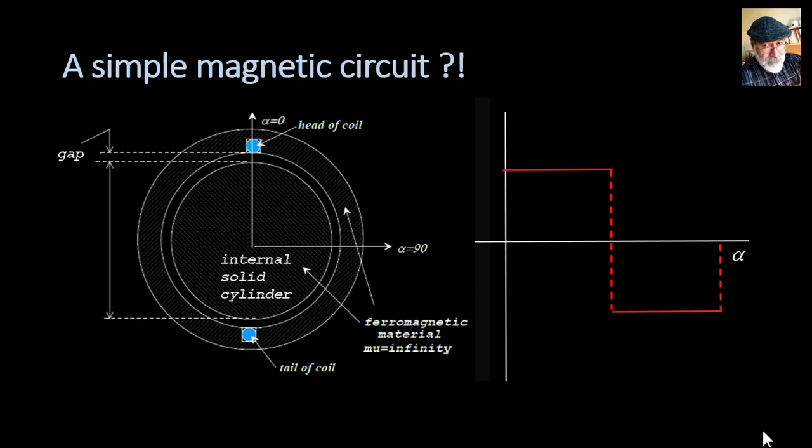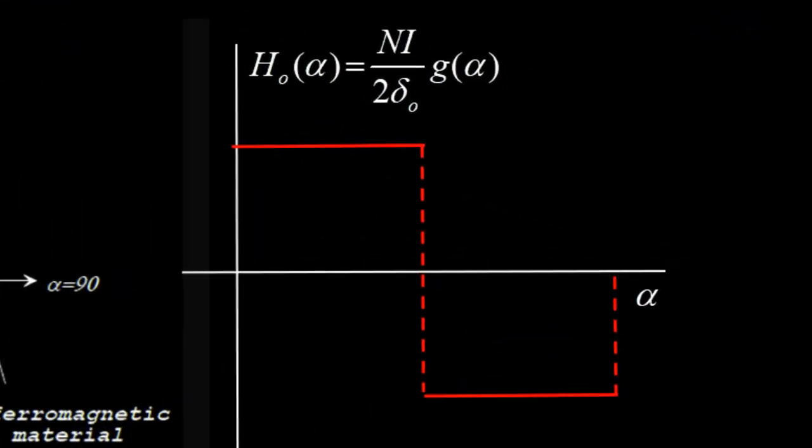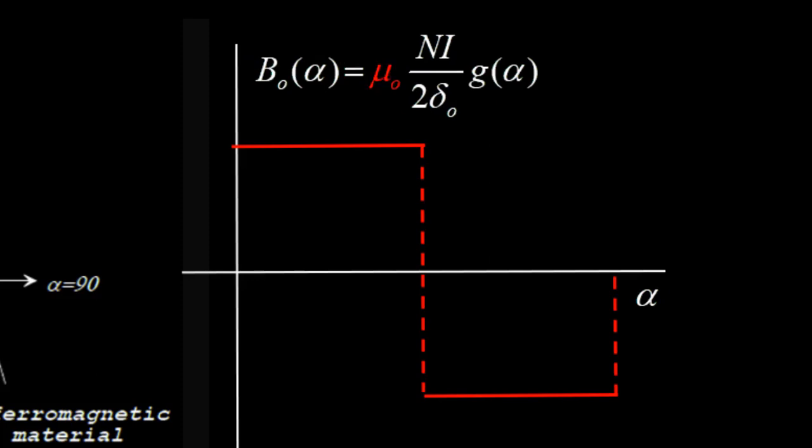It has the same value between zero degrees and 180 and between 180 and 360 degrees. The total magnetic potential drop was Ni divided by 2 delta naught. That was the value of the magnetic field multiplied by G alpha, the unit square wave. If we multiply that by mu-naught, we get the flux density in the air gap that has the square wave shape.